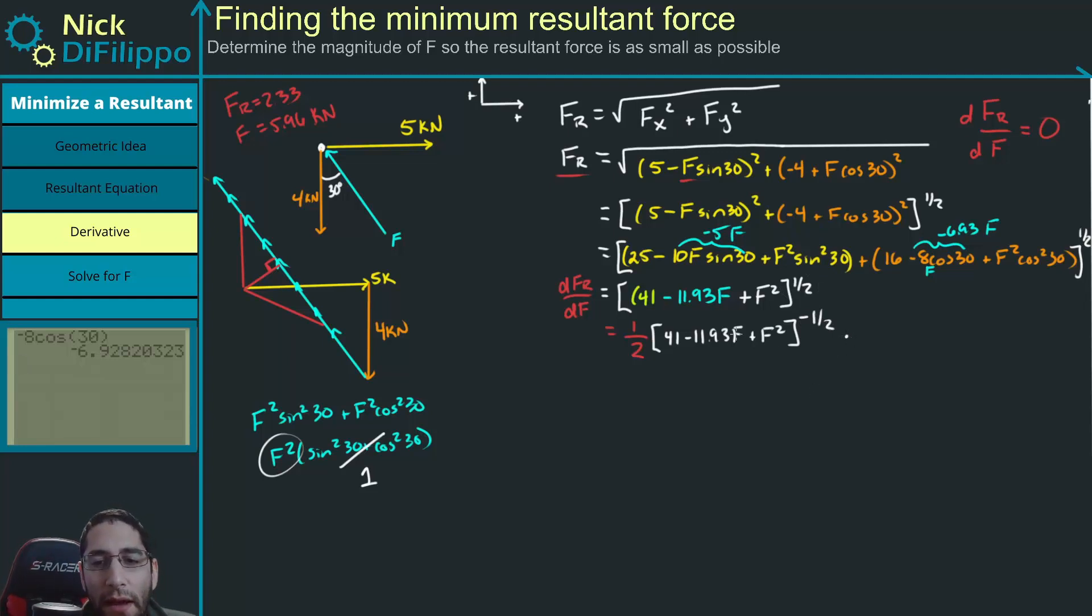And then we multiply it with the derivative of this inner term. So the inner term with respect to F, this term goes away. This term becomes minus 11.93. And the next term becomes plus 2F.